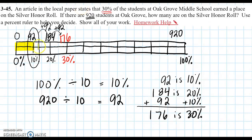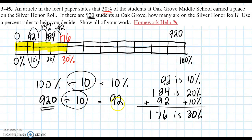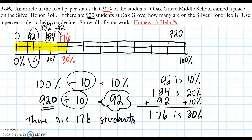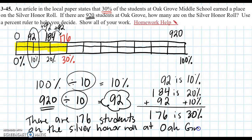That would be 10% plus another 10%, plus another 10%, that's 30%. So by adding 10% intervals, we got to 30%. We divided our number line into 10 pieces and said: if our percents are divided into tenths, let's take our students and divide them into 10 equal parts, and that would be 92 students per 10%. So let's just wrap it up: 30% of the students means that there are 176 students on the silver honor roll at Oak Grove. Thank you so much, everybody, for watching. Hope you enjoyed and I will catch you later.